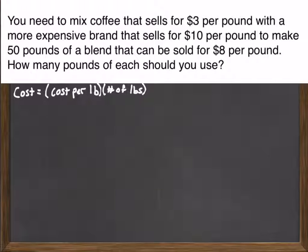So as we read this problem, we say that we need to mix coffee that sells for $3 per pound with a more expensive brand that sells for $10 per pound to make 50 pounds of a blend that can be sold for $8 per pound. We want to know how many pounds of each variety of coffee we should use to do this.